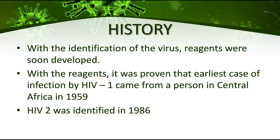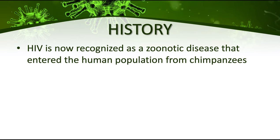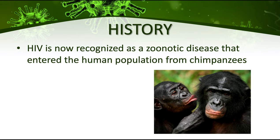Most of the patients showing pneumonia and Kaposi sarcoma were already patients with an advanced stage — not just of HIV but of AIDS. During that time, they were also able to identify that it was HIV-2 that was identified in the 1980s pandemic patients. So roughly we actually have two strains: HIV-1 and HIV-2. HIV is now recognized as a zoonotic disease that entered the human population from chimpanzees.